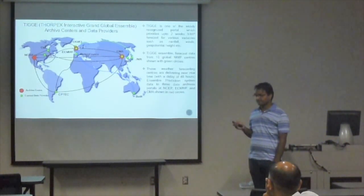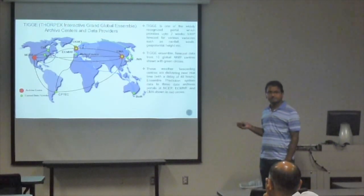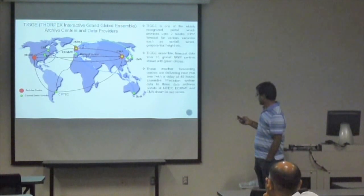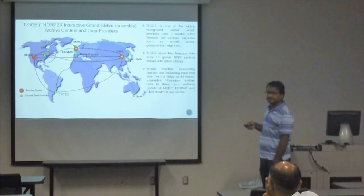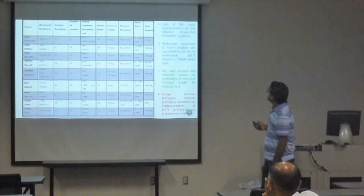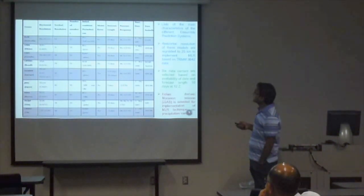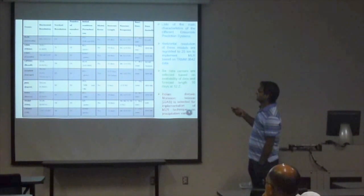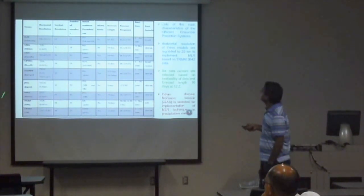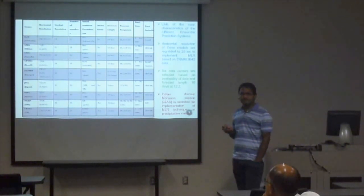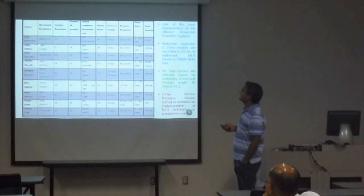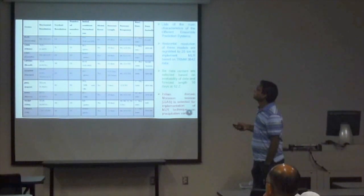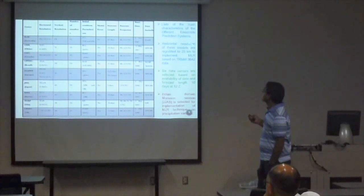This data is available for real-time purposes, and for the study I use this data. The main characteristics of the different ensemble prediction systems are shown here. There are 10 ensemble prediction systems which have different resolutions. To include multi-linear regression techniques, it is required to re-grid all these global model data to a single grid.